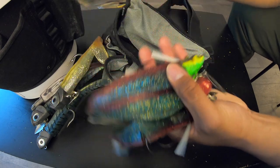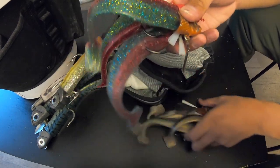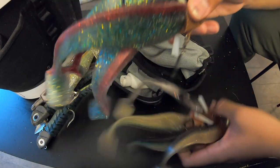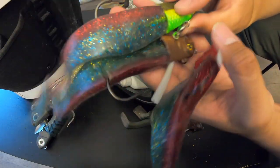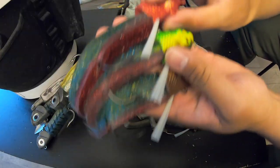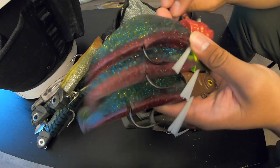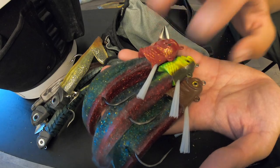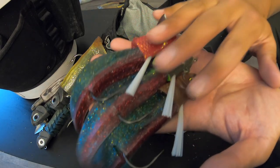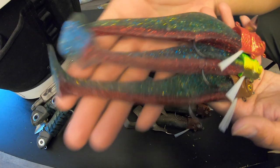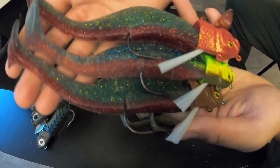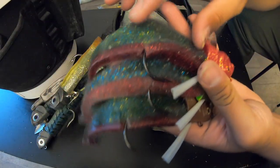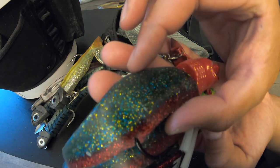Now let's talk about the swimbaits themselves. You'll notice I pretty much have these two colors right here, and that's because that's what I have confidence in. That's what catches lingcod day in day out on these charter boats. You don't have to waste money buying all these different colors in my opinion. I did that and at the end of the day this is what I've narrowed and filtered everything down to.